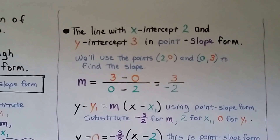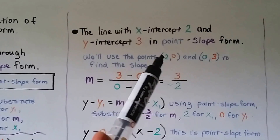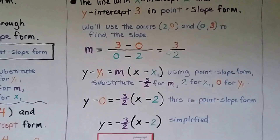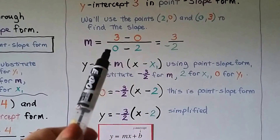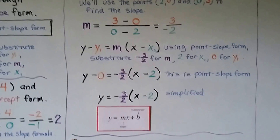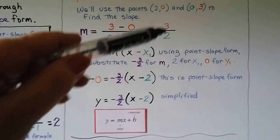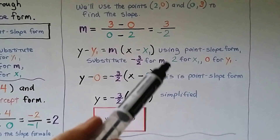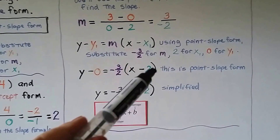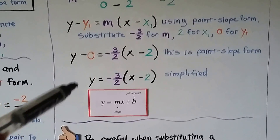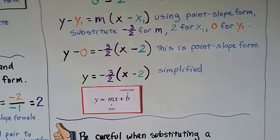The line with x-intercept 2 and y-intercept 3 in point-slope form. We use the points (2, 0) and (0, 3) to find the slope. Slope formula: 3 minus 0 over 0 minus 2 gives 3 over negative 2, which is negative 3 halves. We substitute into point-slope form with m equals negative 3 halves, x sub 1 equals 2, y sub 1 equals 0. Since y minus 0 is just y, we get y equals negative 3 halves times x minus 2.